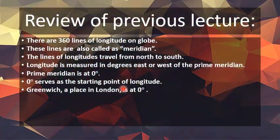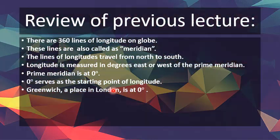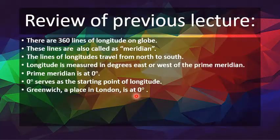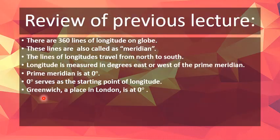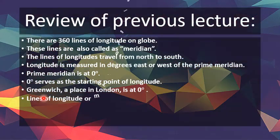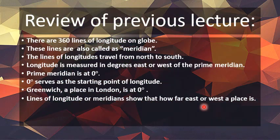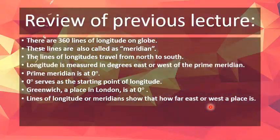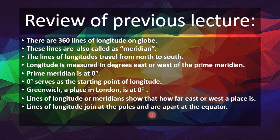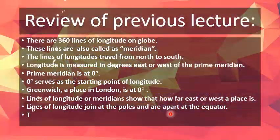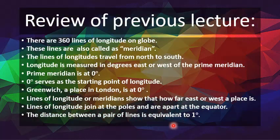Greenwich serves as the starting point — it is at zero degrees longitude. Lines of longitude, or meridians, show how far east or west a place is. Lines of longitude join at the poles and are apart at the equator. The distance between a pair of lines is equivalent to one degree.